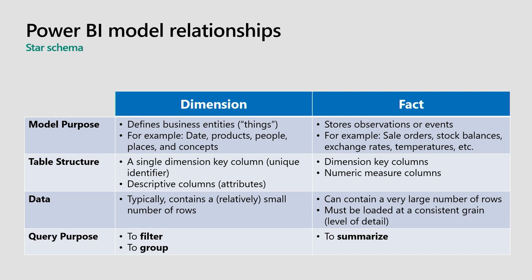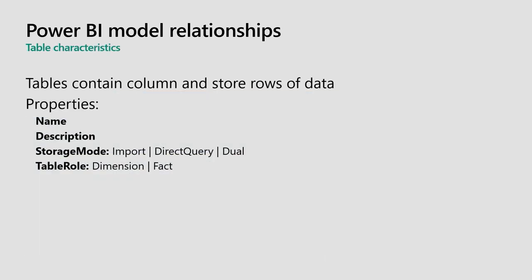Fact tables represent an accumulation of business activity—sales, temperature readings, budgets. Their purpose is to deliver measures or summarization. In an analytic query there are three distinct phases: filter, group, and summarize. Think of your model design as needing tables that map to this: dimension tables for filtering and grouping, with relationships across to fact tables that achieve summarization.